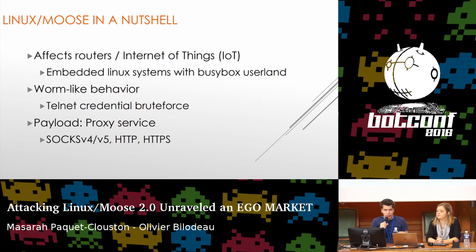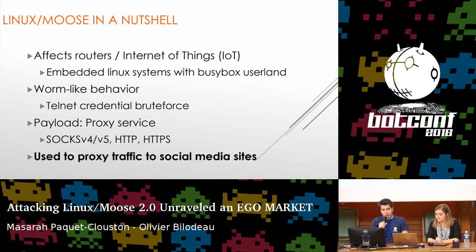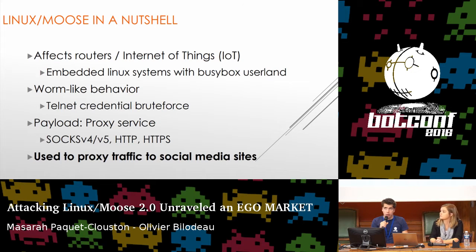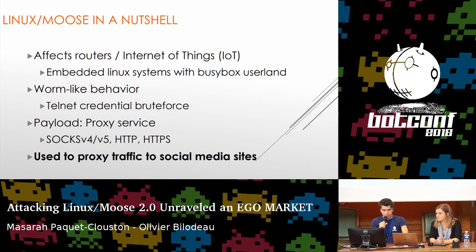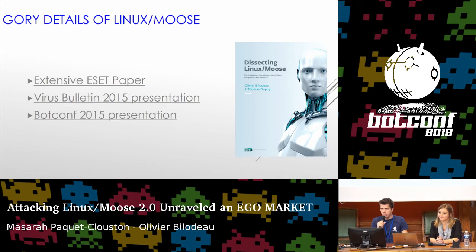That proxy service is really the core piece, as we've seen deployed in honeypots — that is why it exists. It's used to proxy traffic to social media sites, which was the odd thing we found. After a long time of reverse engineering, when we launched it into honeypots a year and a half ago, we were like — why is everything going to social media sites? A lot of the traffic was HTTPS, which prevented us from understanding what was going on. All the gory details have already been released, so anyone curious can go to the ESET paper or past presentations.